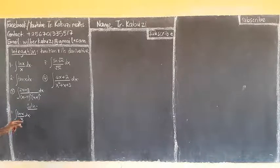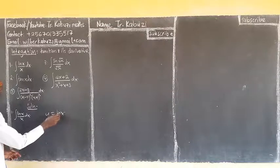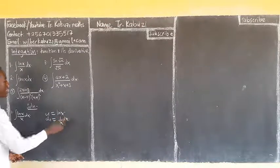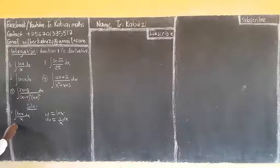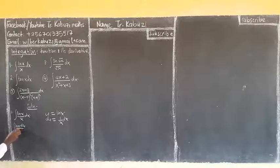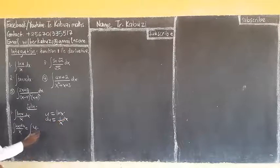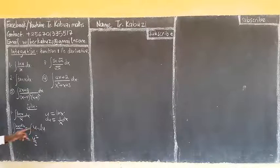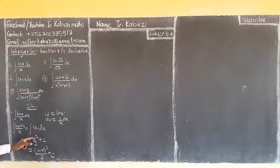You select u equal to ln(x). When you differentiate ln(x) you get 1 over x dx, and 1 over x is already there. So the integral of ln(x) over x becomes the integral of u du, which is u squared over 2. Substituting back, u is ln(x), so the answer is (ln x)² over 2 plus c.